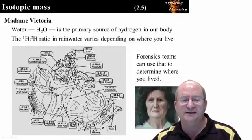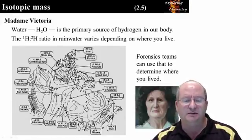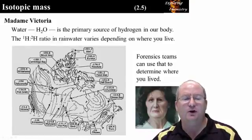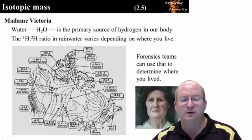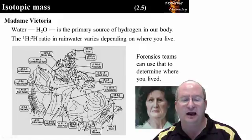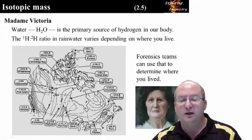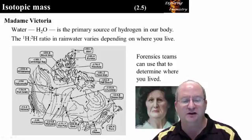The picture is of Madame Victoria. Her real identity is unknown. Her skeletal remains were discovered in Montreal in 2001. She had been dead for over two years. However, her hair remained. Hair grows approximately one centimeter per month. By analyzing Madame Victoria's 30 centimeter hair, forensic scientists were able to determine that she was living in northern Ontario or Quebec three and a half years before her death, and that she lived in seven different locations in the three and a half years leading up to her death. This information was obtained solely from an isotopic analysis of her hair. However, it wasn't enough information to identify her, and her identity remains unknown today.